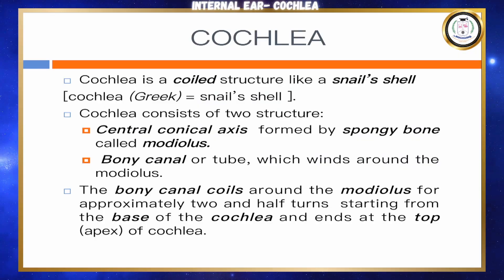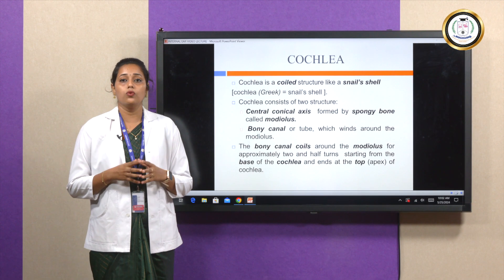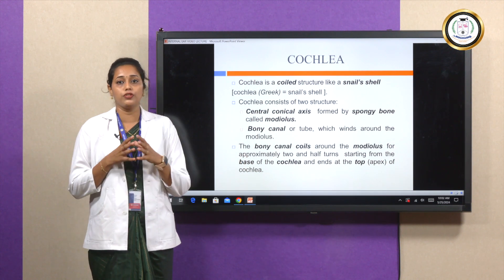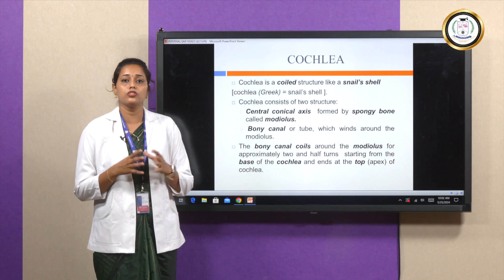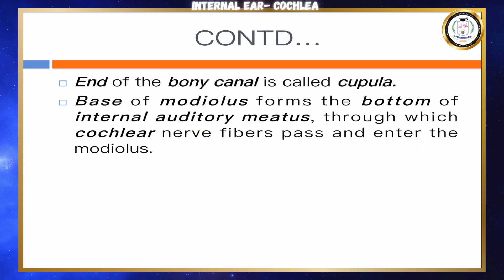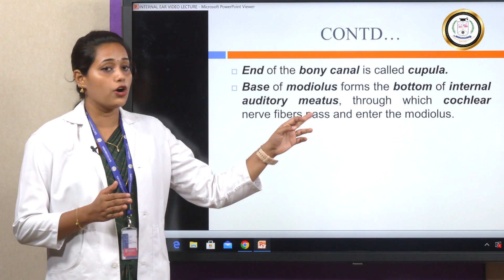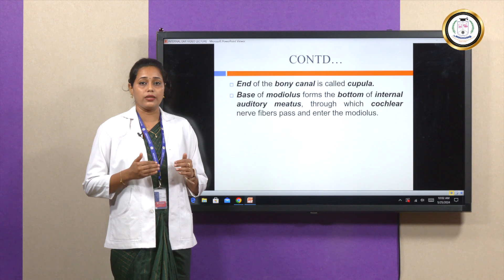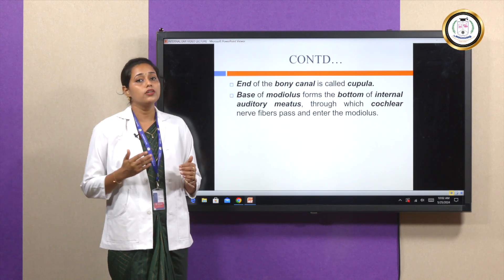The second structure is the bony canal, which winds around the modiolus for about two and a half turns, starting from the base of the cochlea and ending at the apex. The end of the bony canal is called the cupula, and the base of the modiolus forms the floor of the internal acoustic meatus, through which the cochlear nerve fibers enter the modiolus.